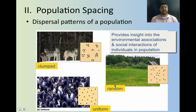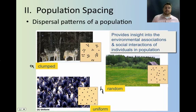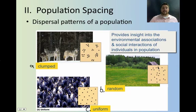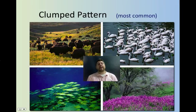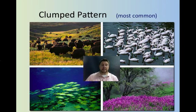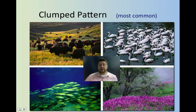The second thing that describes a population is their spacing. There's three basic patterns: clumped, random, and uniform. In clumped, the individuals occur in little groups. Random, they're just scattered throughout. The clumped pattern is the most common found in nature — like a school of fish, where there'll be some fish here and none over there, or a herd of buffalo. That's by far the most common you see in nature.